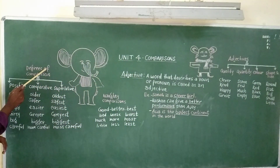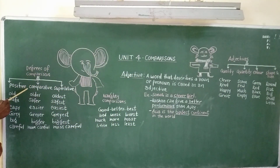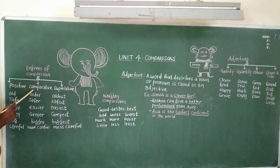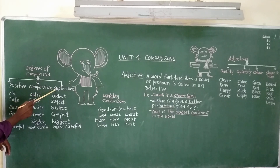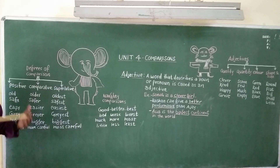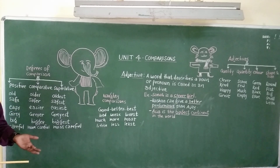Now let us see degrees of comparison. In English, there are three degrees of comparison: positive degree, comparative degree, and superlative degree. In these three degrees, we use different forms of adjectives.